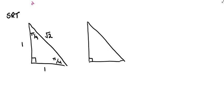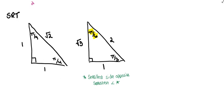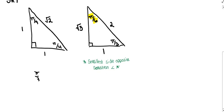In our 30-60-90, we've got pi over 6 and pi over 3. Just a reminder to put the smallest angle opposite the smallest side. The smallest angle here is pi over 6, so I'm going to label 1 opposite pi over 6, root 3 opposite pi over 3, and the hypotenuse is 2. Just a reminder that pi over 3 is equivalent to 60 degrees, pi over 6 is equivalent to 30 degrees, and pi over 4 is equivalent to 45 degrees.